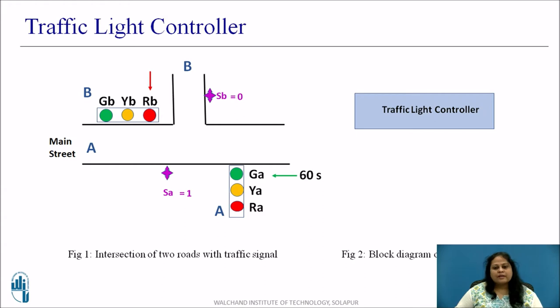Let us now see the block diagram of this traffic light controller. The clock and the sensor outputs are acting as inputs to this controller while 3 of the outputs GA, YA and RA drive the lights on street B.